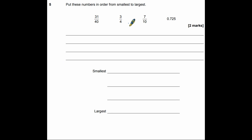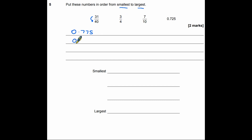Question 5 gives us three fractions and a decimal to put in order from smallest to largest. The simplest way is to convert all four into decimals. So 31 over 40 gives 0.775; 3 over 4 is 0.75; 7 over 10 is 0.7; and the decimal we already have is 0.725.